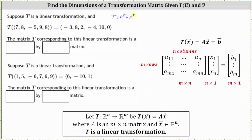If the linear transformation is given by T of vector x equals matrix A times vector x, which is equal to some output vector b, notice if matrix A is an m by n matrix, the number of rows in matrix A is equal to the number of components in the output vector, or the vector in the co-domain, which in this case is vector b. This is because the rows of matrix A give the coefficients of the equations for each component in vector b in the co-domain. Also notice how the number of columns in matrix A is equal to the number of components or rows for the input vector x, or the vectors in the domain.